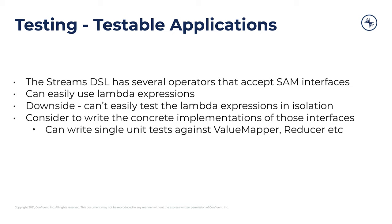Now some good practices for writing testable applications. You'll notice that the streams DSL has a lot of operators that accept SAM interfaces or functional interfaces. This is convenient for writing an application because you can just use a lambda expression — it's less code in general. But this has the downside that you can't as easily test that same lambda in isolation. It's going to be much more convenient for you to test the arguments to these map values or reduce methods if you actually write a concrete implementation of the interface instead of using a lambda. That way you can write unit tests for each of your value mappers or your reducers, all of these things in isolation to make sure that each step of the way has been thoroughly tested.